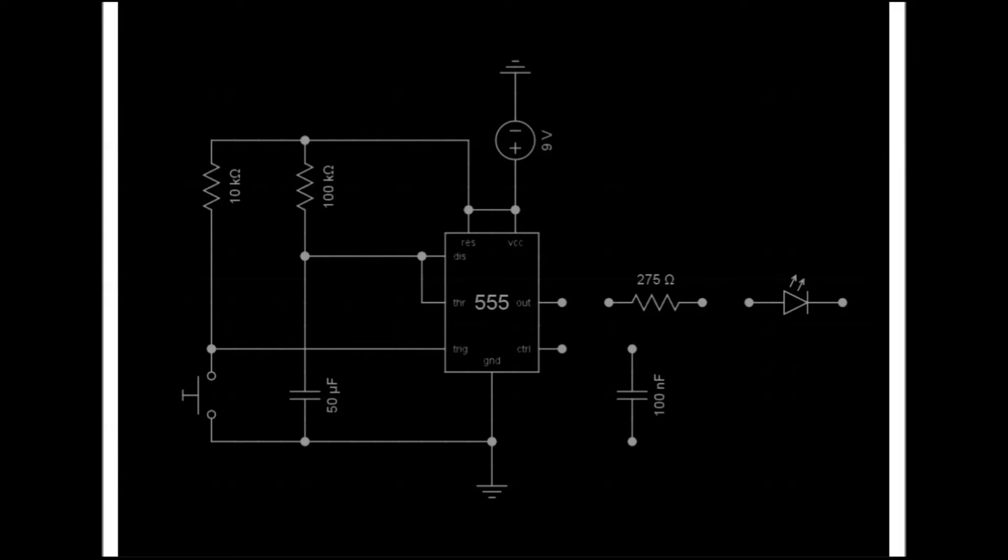Pin 5, the control pin, is connected to the 100nF capacitor. The capacitor then connects to ground. And lastly, pin 3, the output pin, is connected to the resistor and LED and then to ground.